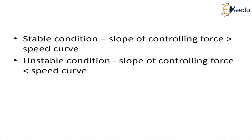So we know for the stable condition, the slope of controlling curve should be greater than the speed curve. Then the governor is stable. If this condition is not satisfied, the governor is unstable. Thank you.